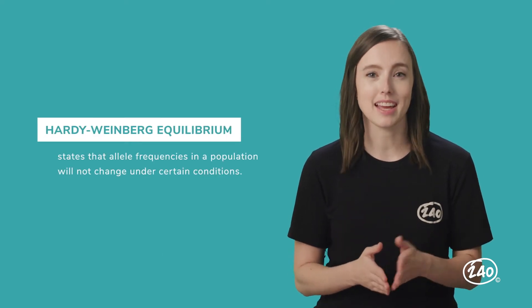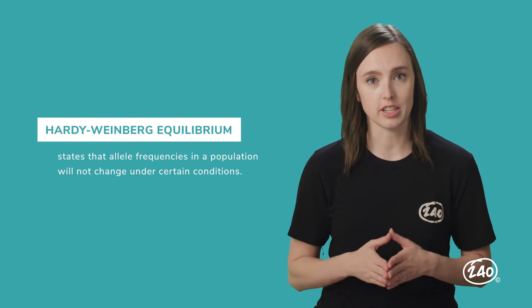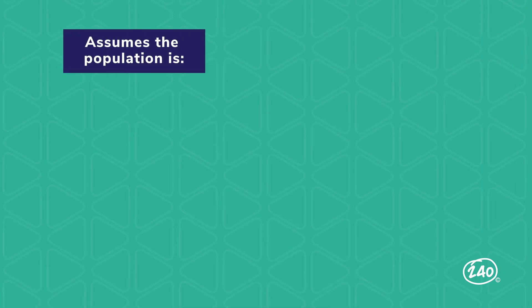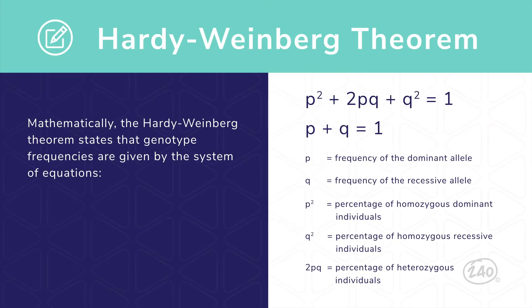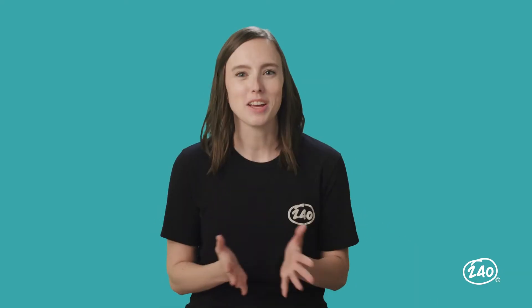The study guide has all of these covered. Let's look at the Hardy-Weinberg equilibrium. It states that allele frequencies in a population will not change under certain conditions. The equation makes specific assumptions, and the model only works if those are true. If the conditions for equilibrium are met, we can use a set of formulas to get information about gene frequency. Mathematically, the Hardy-Weinberg theorem states that genotype frequencies are given by a system of equations. If we know the number of organisms showing a recessive phenotype out of a whole population, we can estimate the number of heterozygous individuals compared to homozygous dominant individuals. Stick around to the end of the video to practice using these equations together.